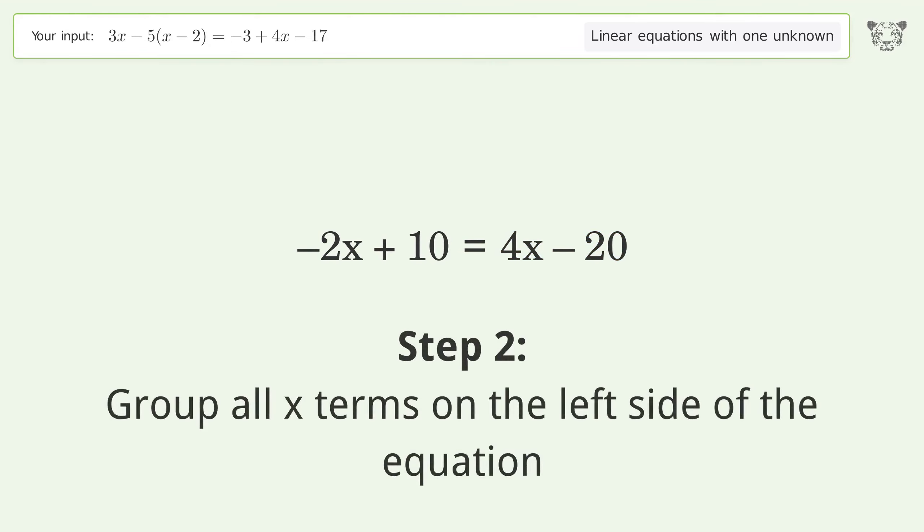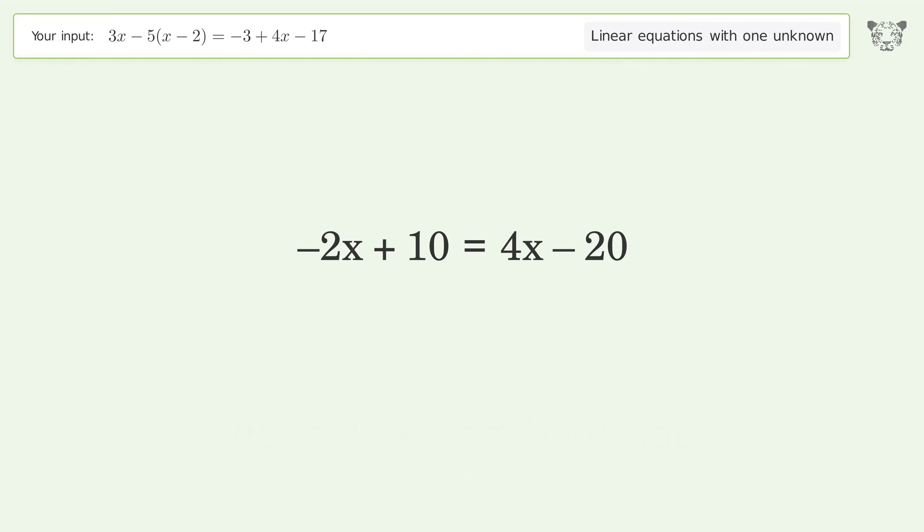Group all x terms on the left side of the equation. Subtract 4x from both sides. Group like terms.